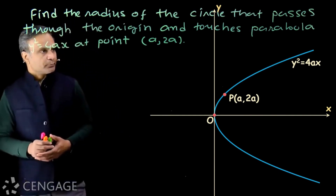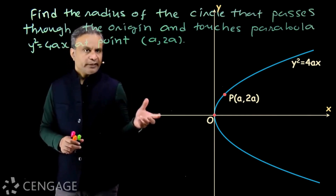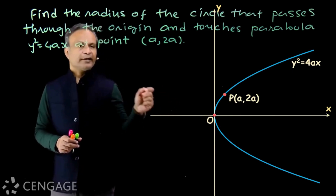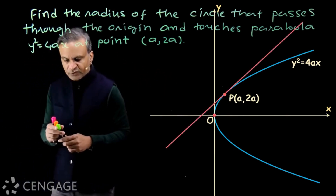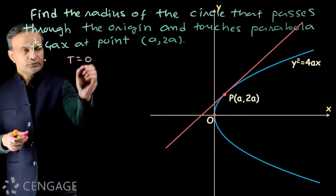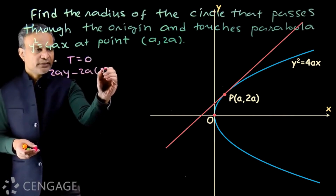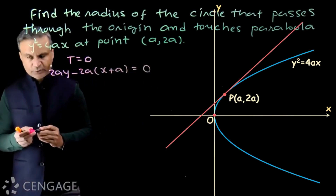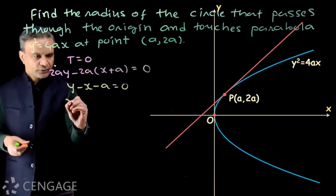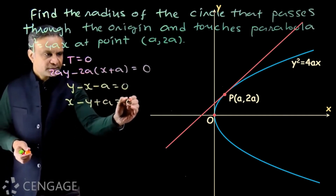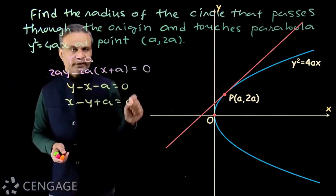How can we make use of the fact that the circle touches the parabola at point P? If a circle touches the parabola at point P, then it will also touch the tangent to the parabola at point P. So we draw the tangent line to the parabola at point P. Using the equation T = 0, the equation of the tangent will be 2ay - 2a(x + a) = 0, which simplifies to y - x - a = 0, or x - y + a = 0.